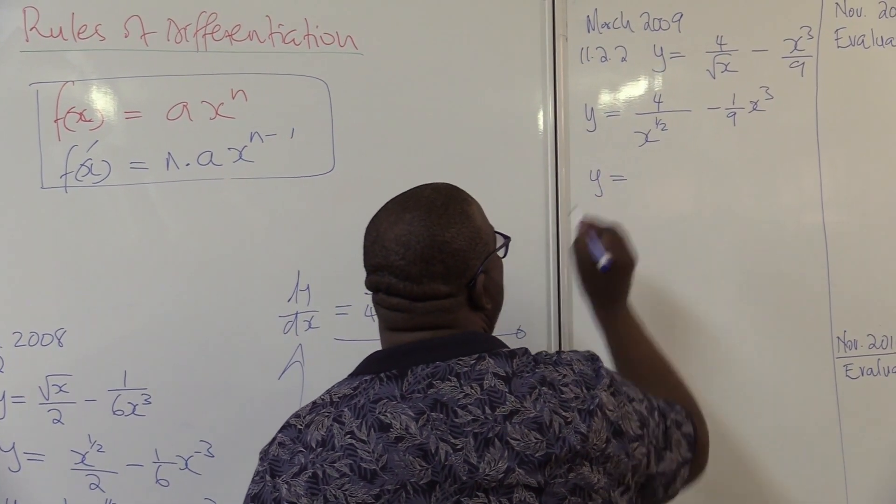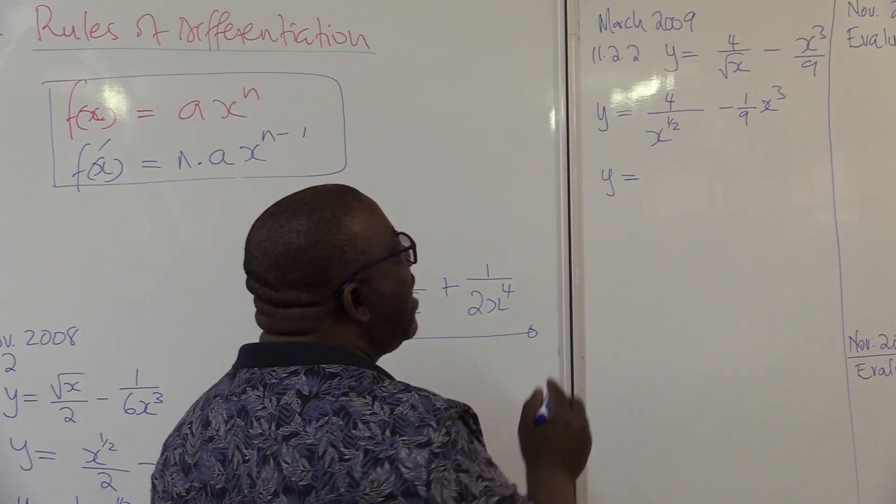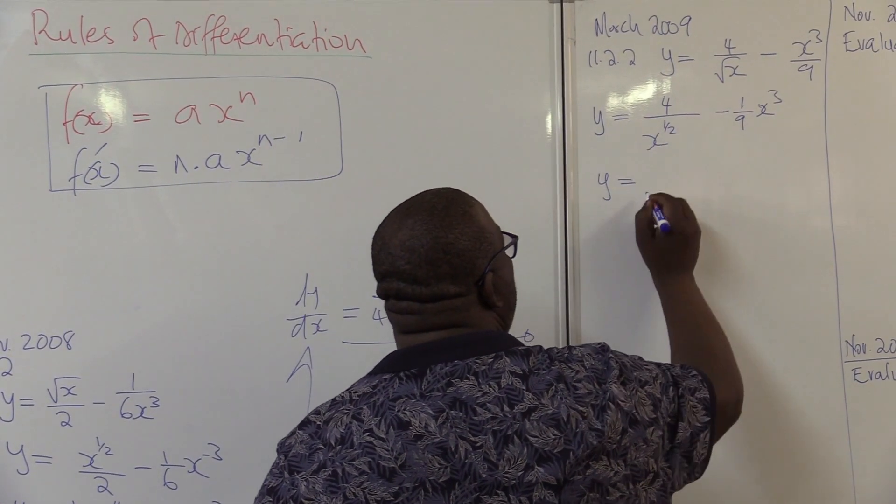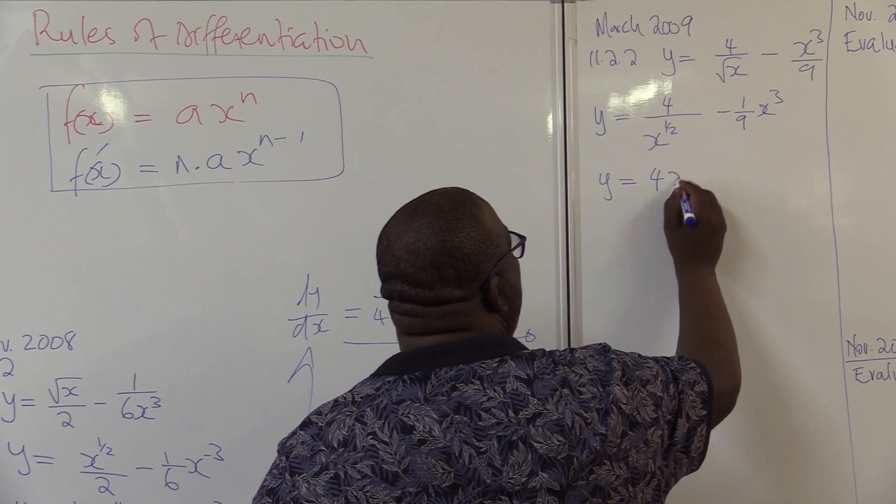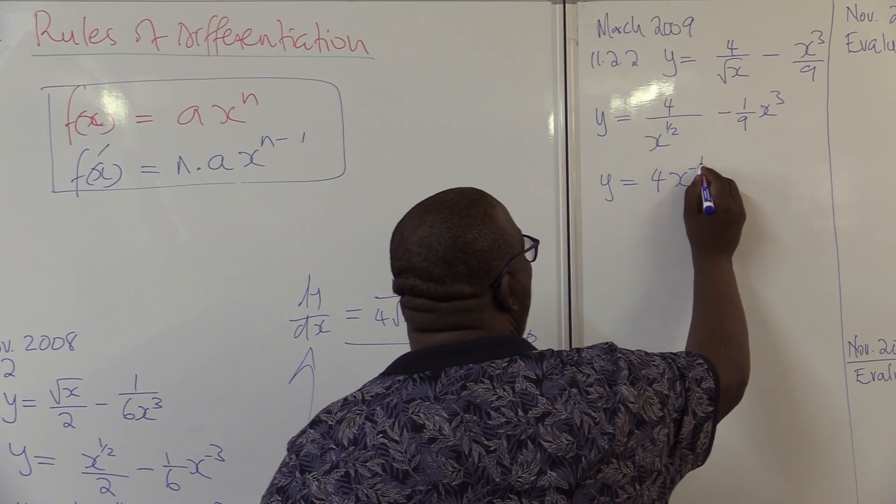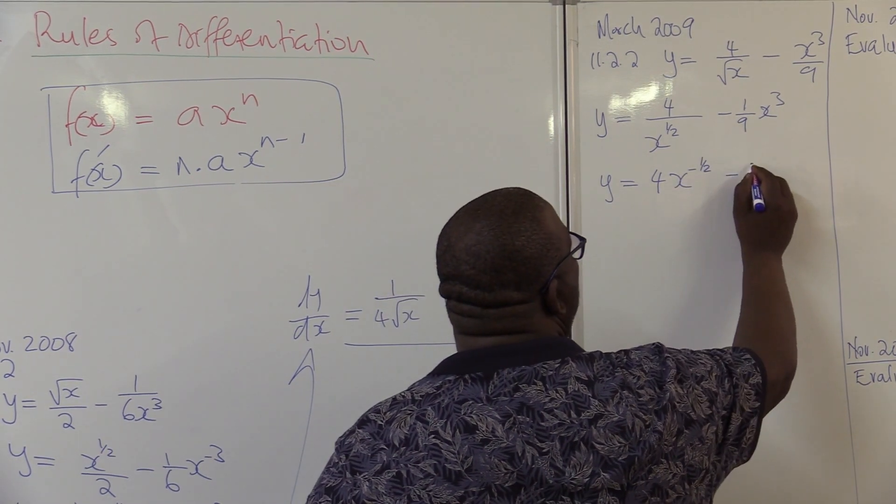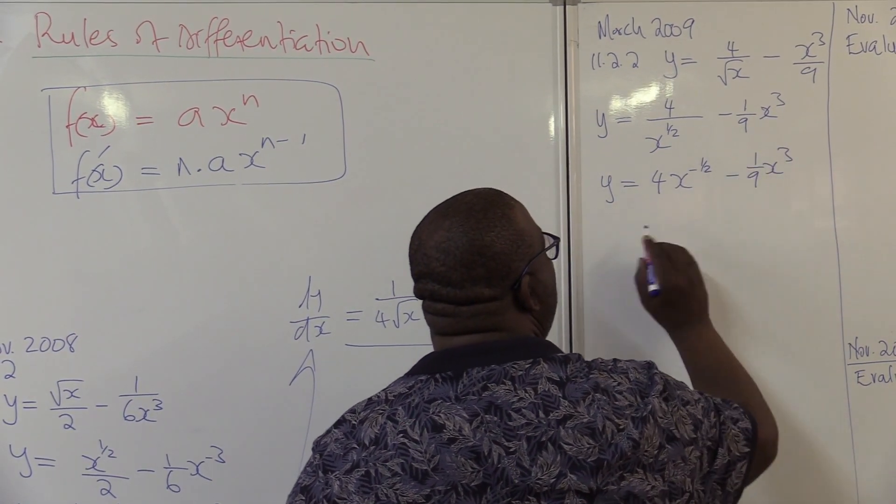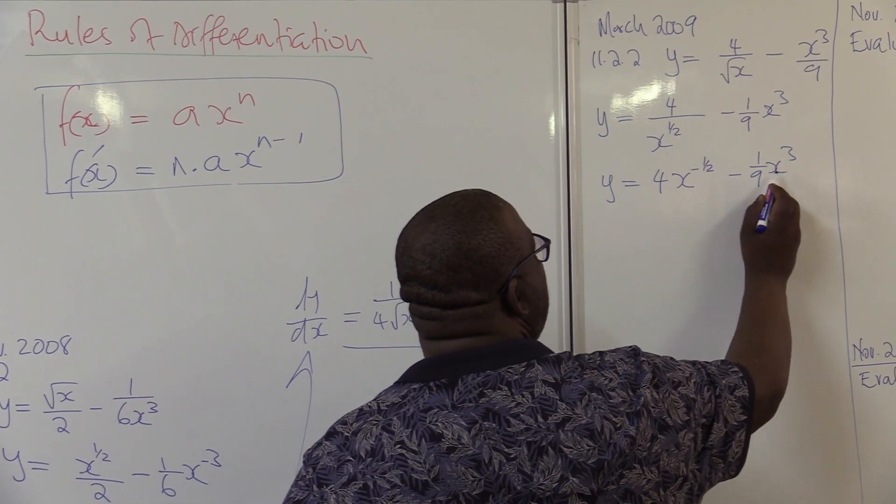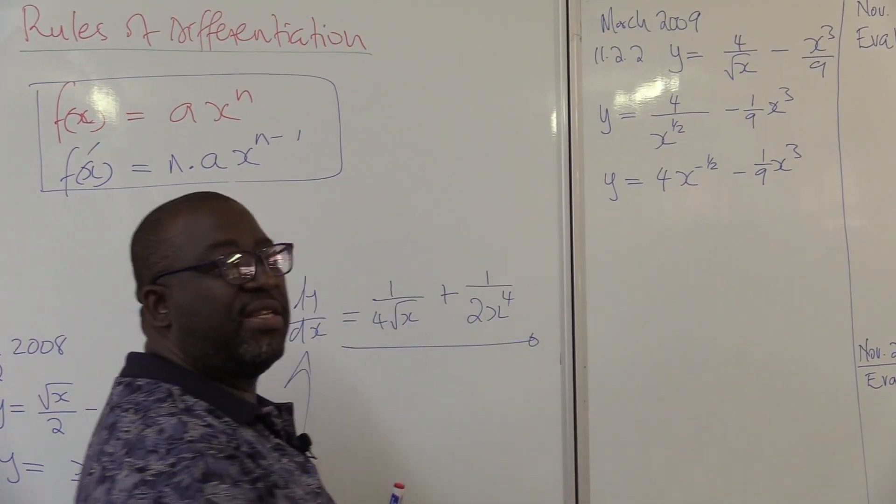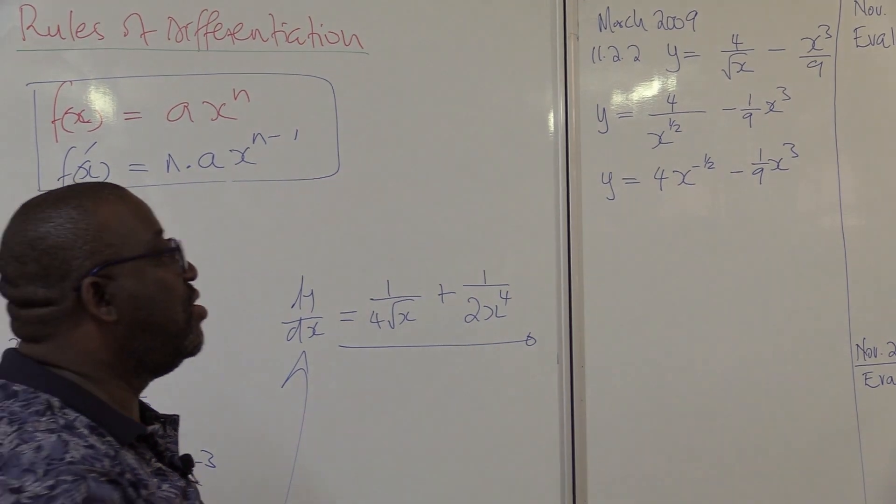So it's going to be y is equals to, let's take this x on top. It will be 4x to the power minus 1 over 2, minus 1 over 9, x to the power 3. ax to the power n. Once it is in that form, then you can find your dy dx.